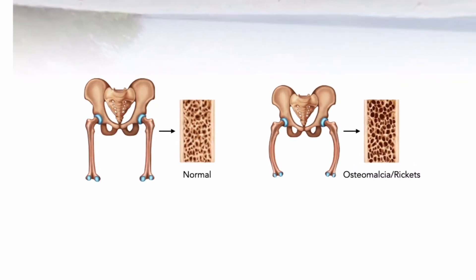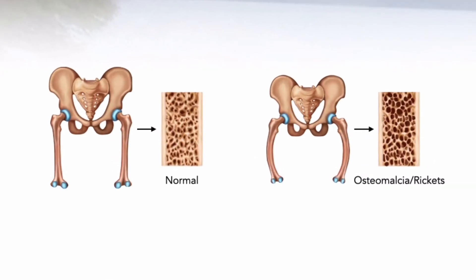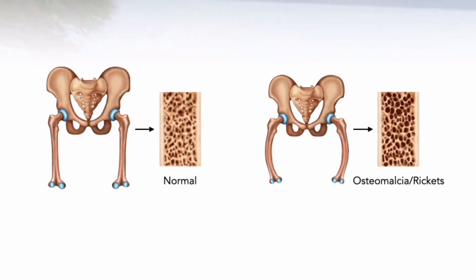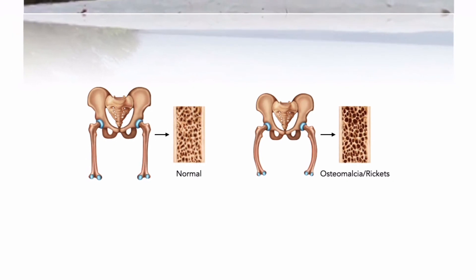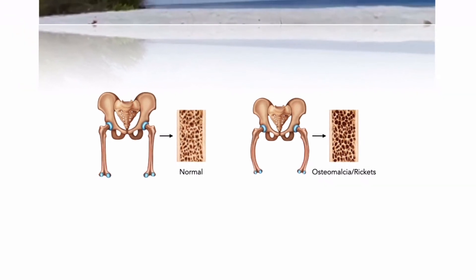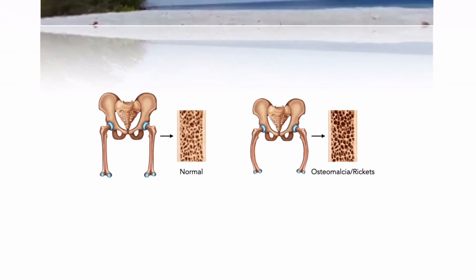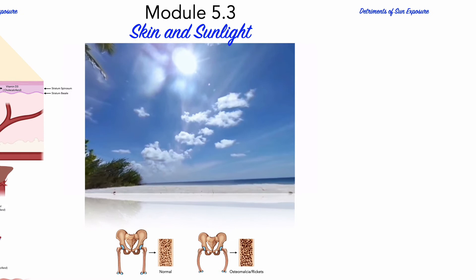The impairment of bone metabolism causes inadequate bone mineralization. Osteomalacia in children is known as rickets, and because of this, the use of the term osteomalacia is often restricted to the milder adult form of the disease. We'll explore the role of vitamin D3 in skeletal development and these aforementioned disorders in module 6 on osseous tissue.